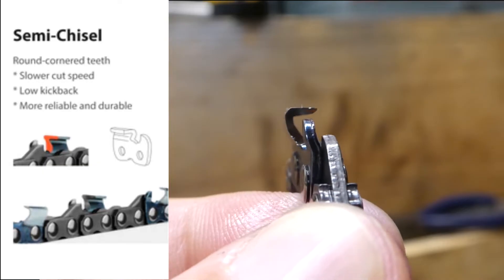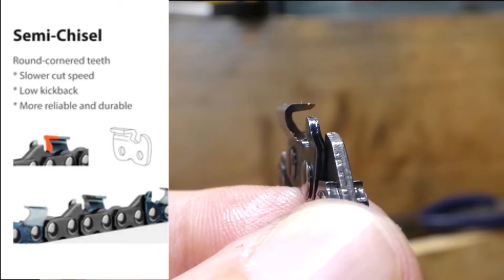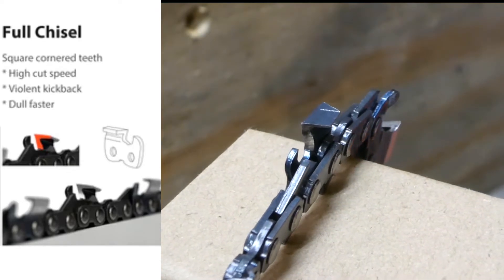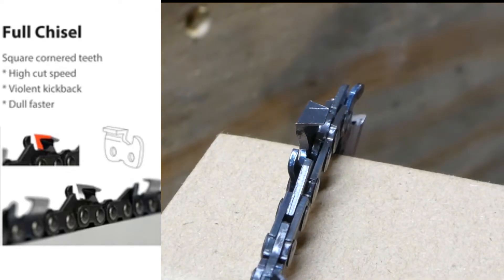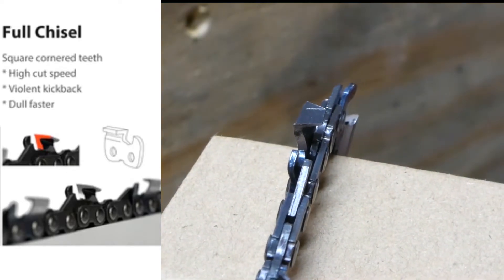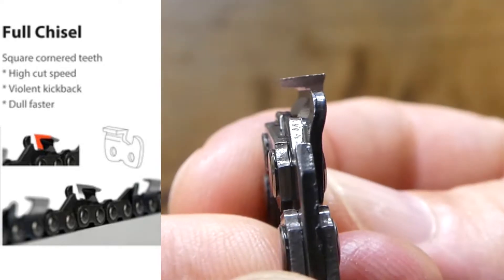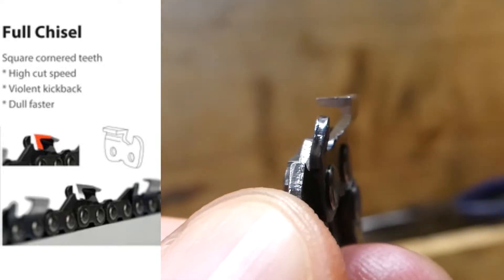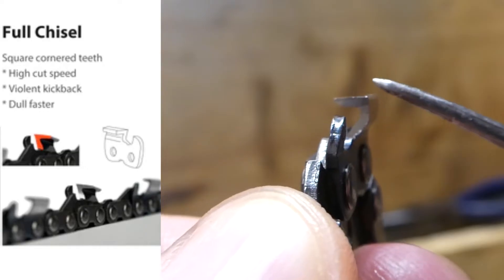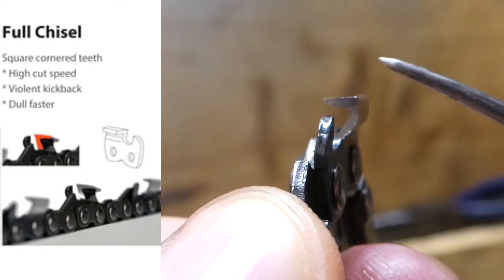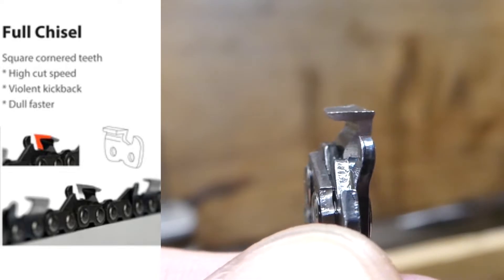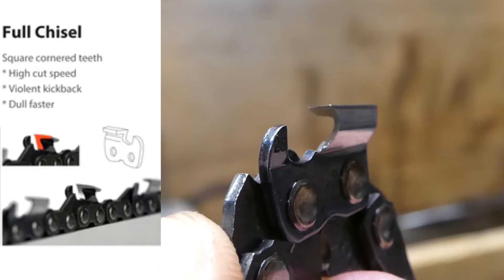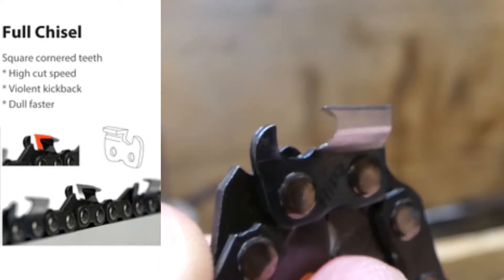Semi-chisel cutters are also less prone to kickback, however they do cut slower than a full chisel. A full chisel cutter is identified by its very sharp shoulder. These take large chunks and cut very fast, but are best for commercial use or experienced users. The reason for this is that they are more prone to kickback, harder to sharpen, and they dull faster as the teeth are more sensitive to dirt and debris wearing them down.